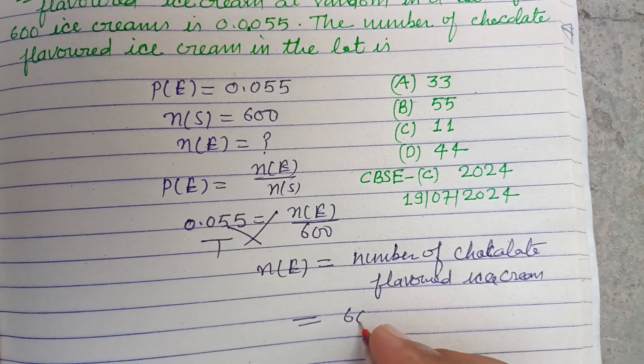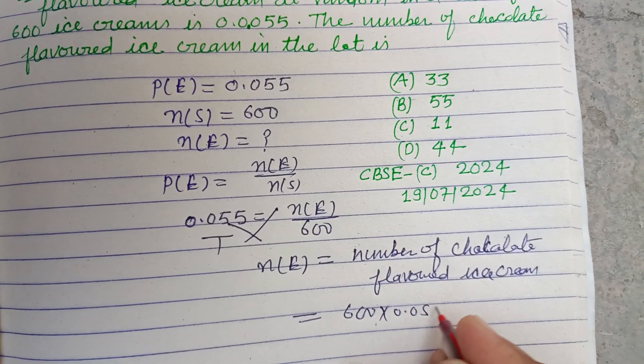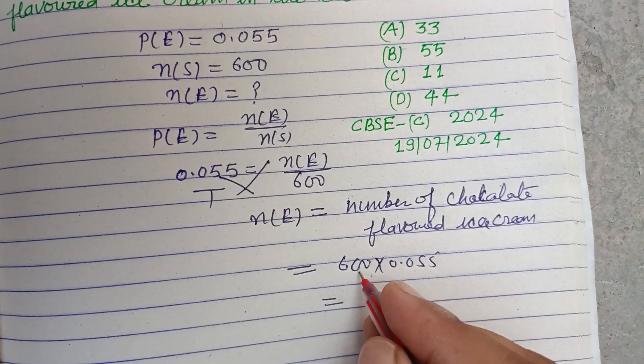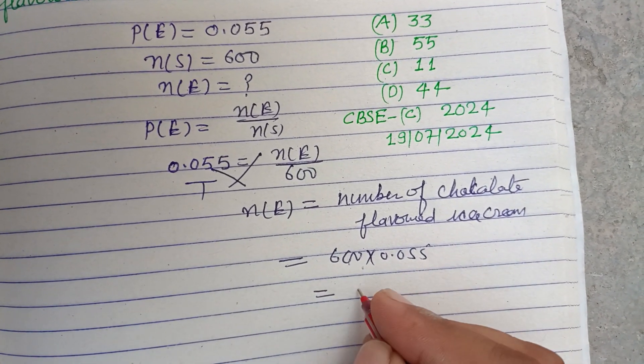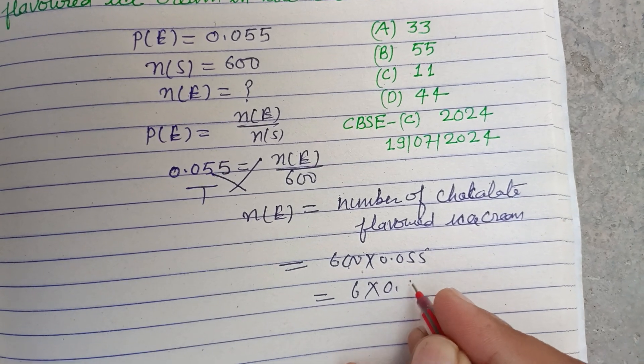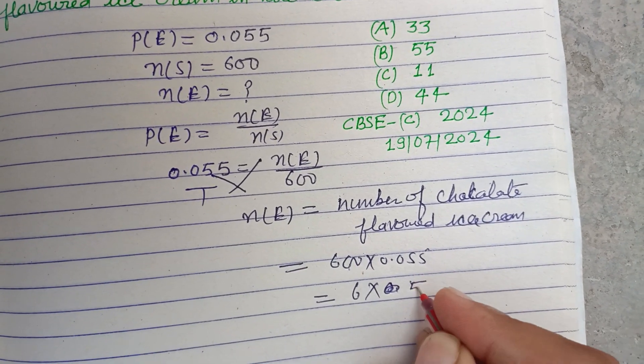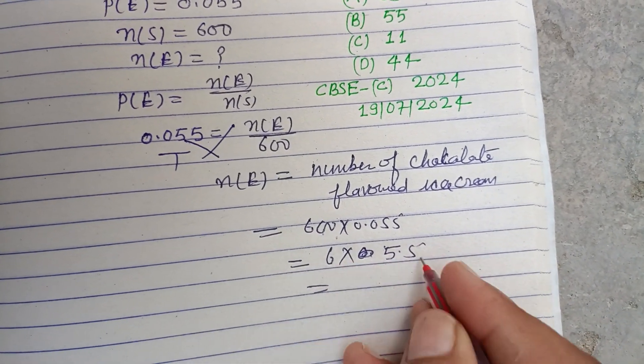So this is 600 times 0.055. Working through the calculation, 6 times 5.5 equals 33.